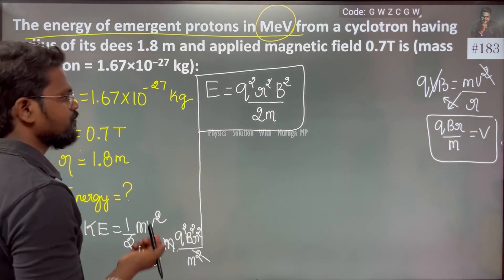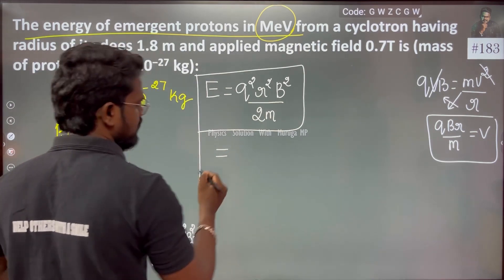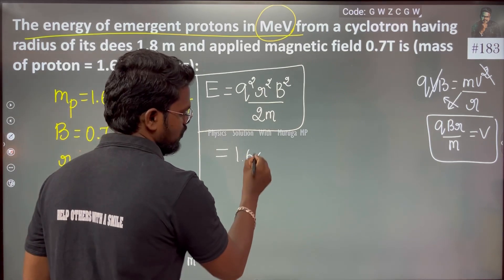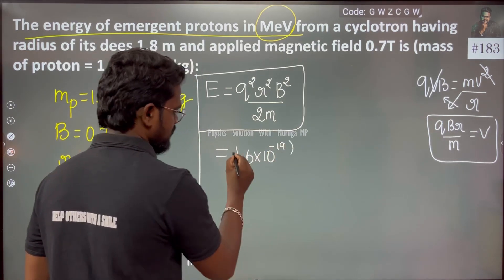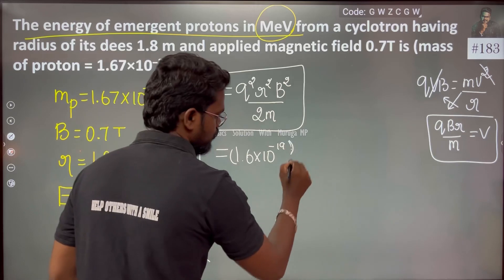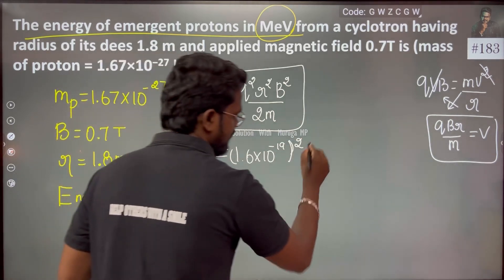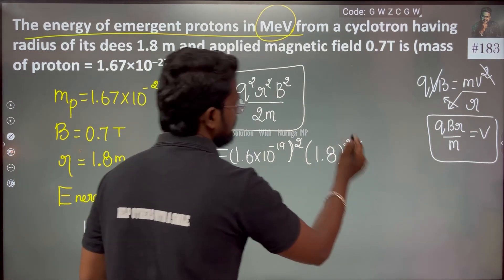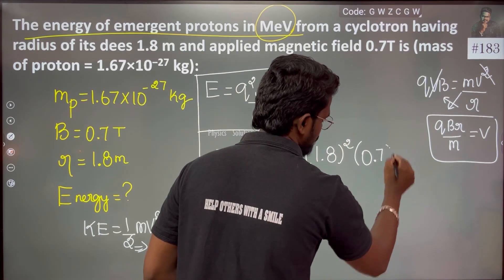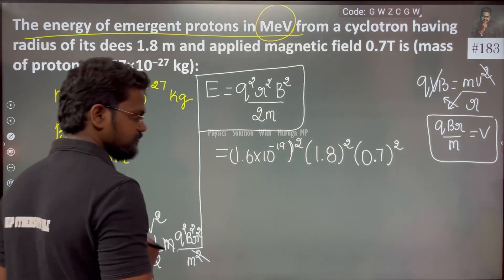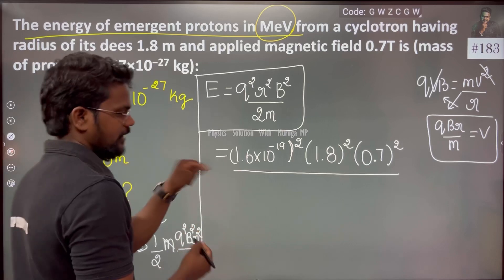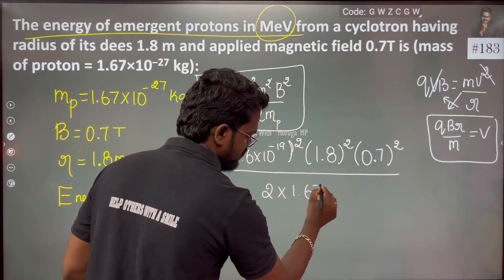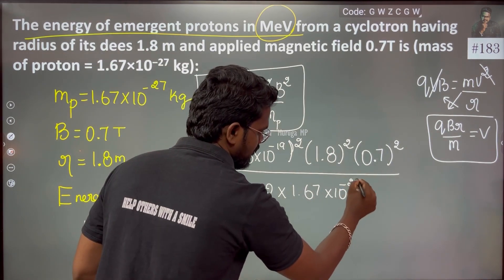We will now substitute the values directly. The charge of the proton equals the charge of the electron: Q = 1.6 × 10⁻¹⁹ C. The radius R = 1.8 m. The magnetic field B = 0.7 T. Whole divided by 2 times the mass of the proton: m = 1.67 × 10⁻²⁷ kg.